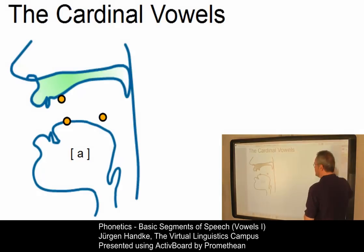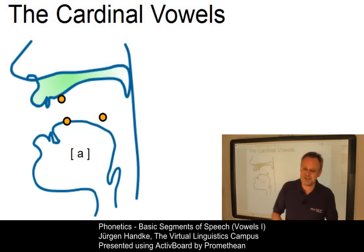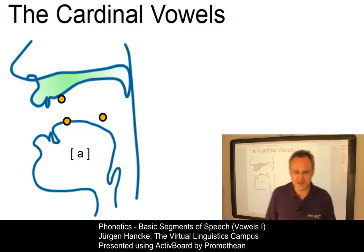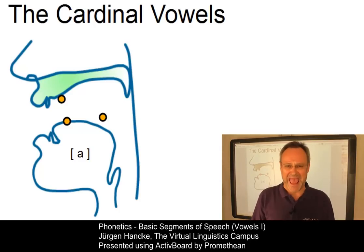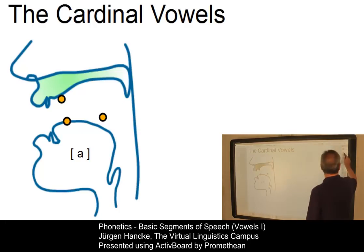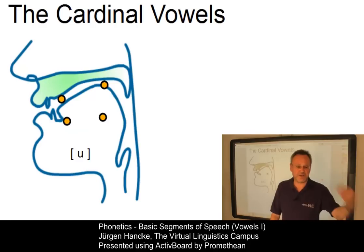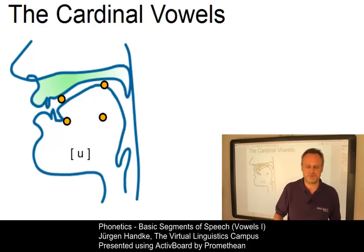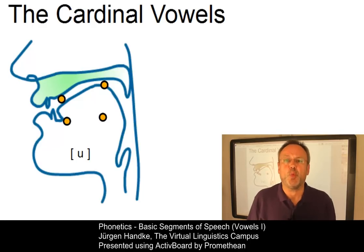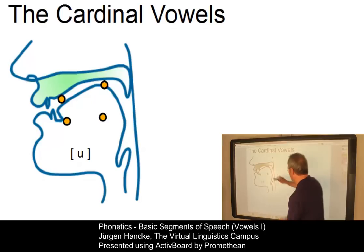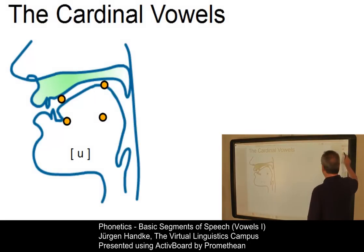We need two further points. The next one is a reference point where the tongue is extremely low and has the most front quality, and the result would be something like 'aaa'. Finally, we need a vowel that is produced with a back quality where the tongue is extremely high in the mouth. If we combine these extreme points, we get a quadrilateral with four reference points.